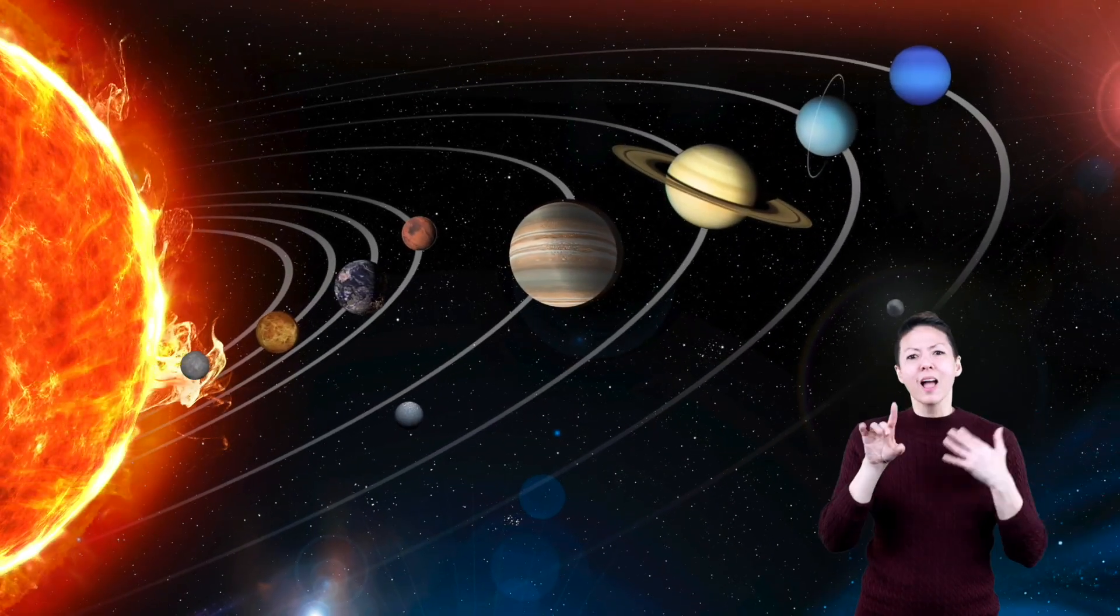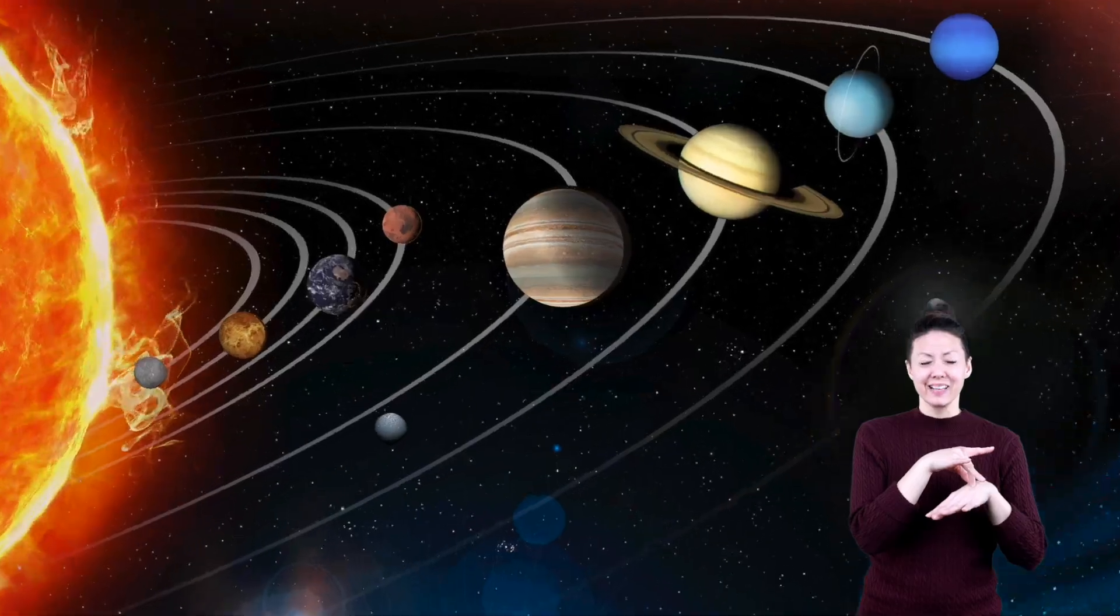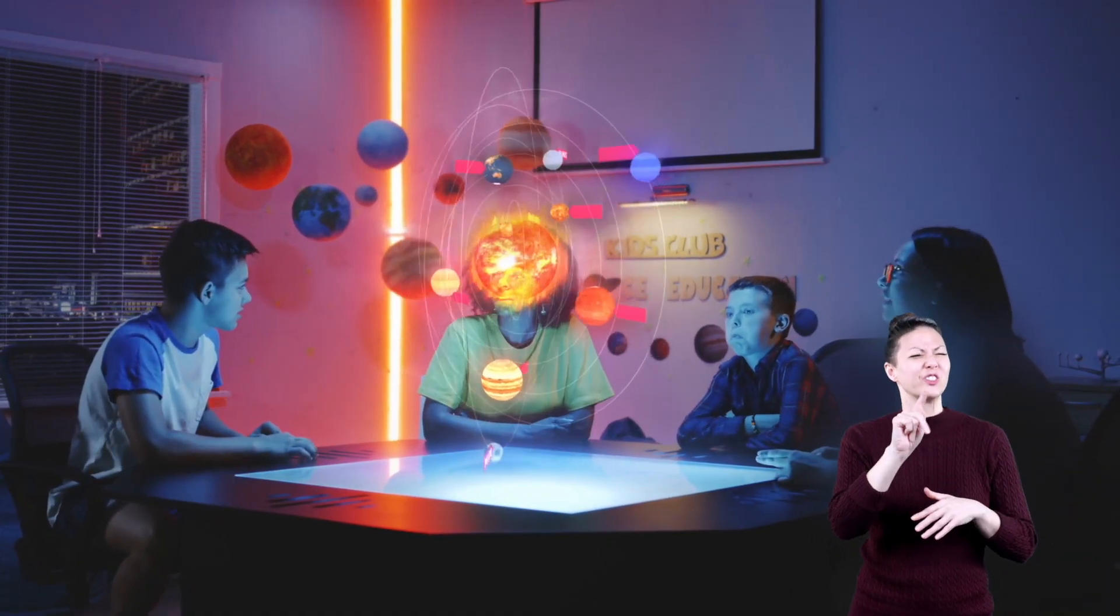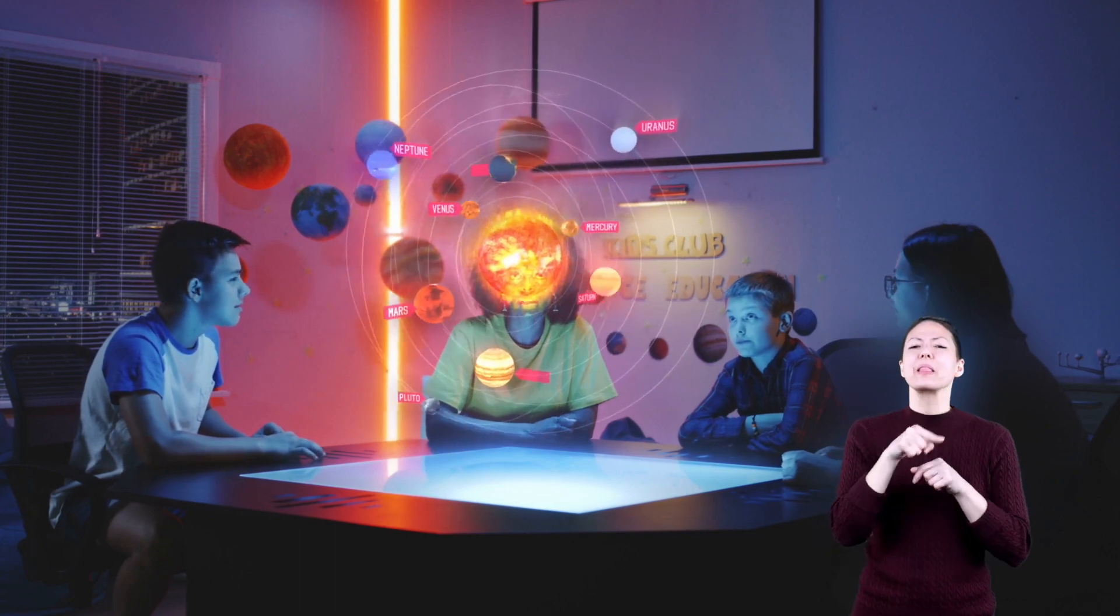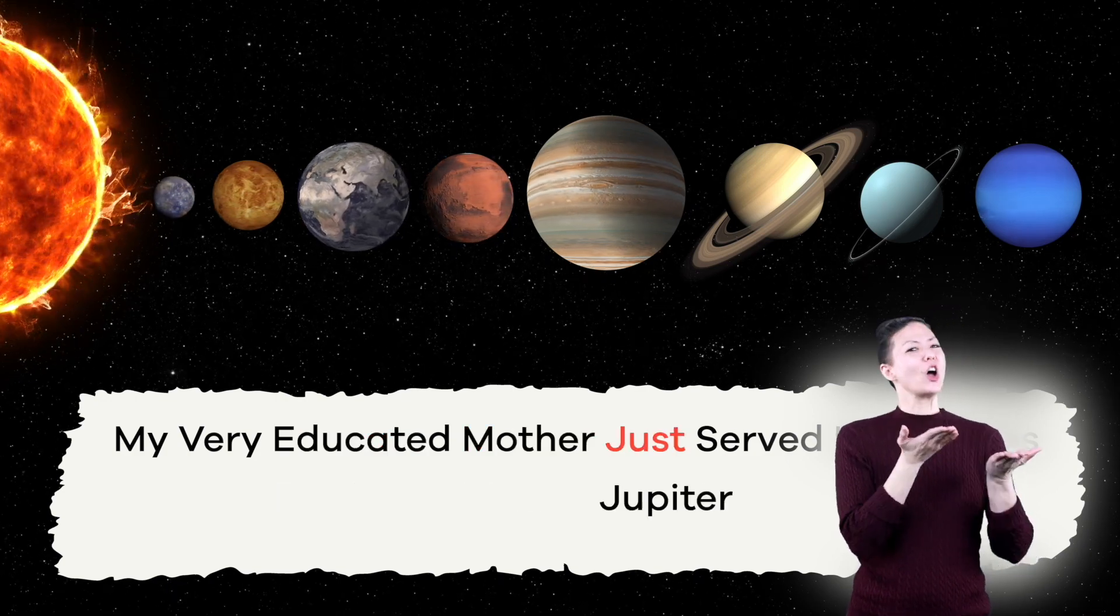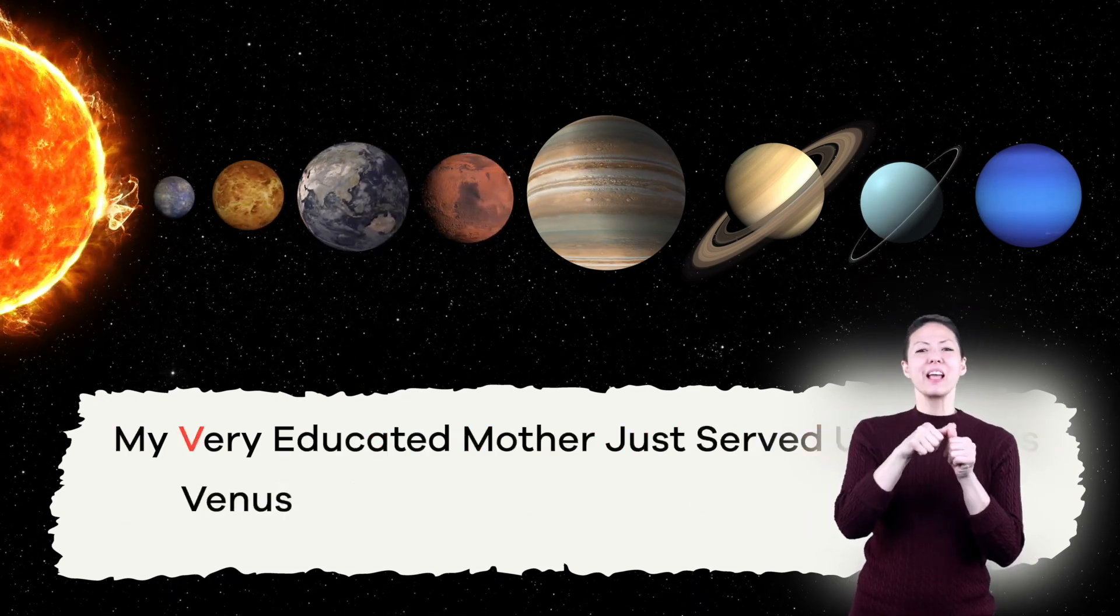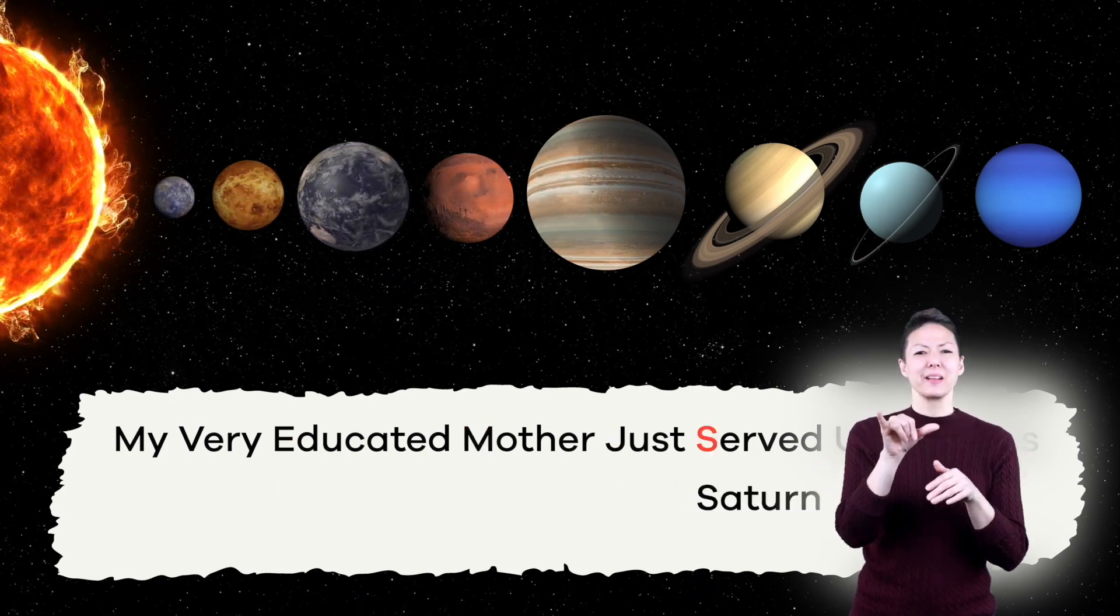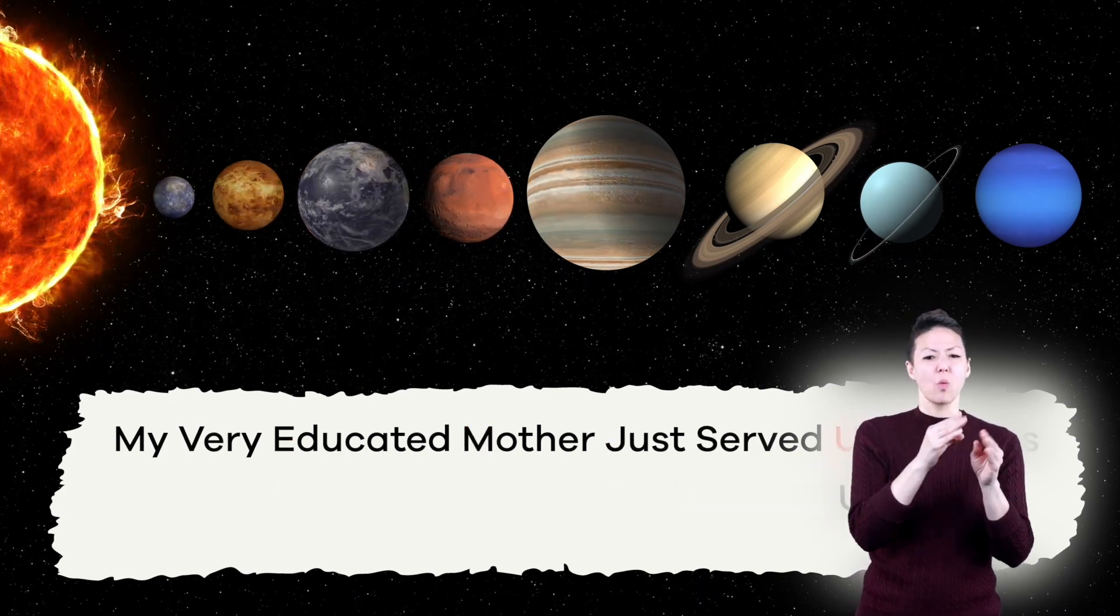And that's our eight planets! Remembering the names of all eight planets can get kind of tricky. This saying might make it easier: My very educated mother just served us noodles. The beginning letter of each word in this sentence is the same beginning letter as each of the eight planets in order.